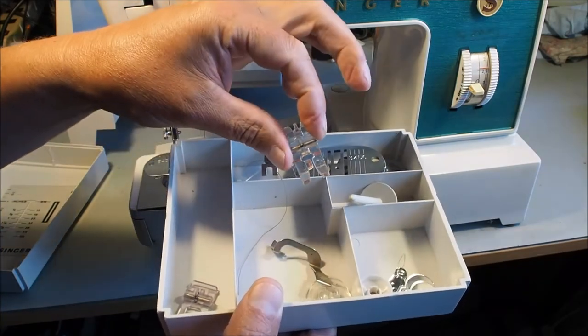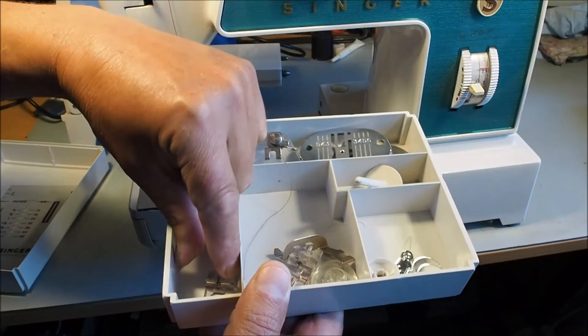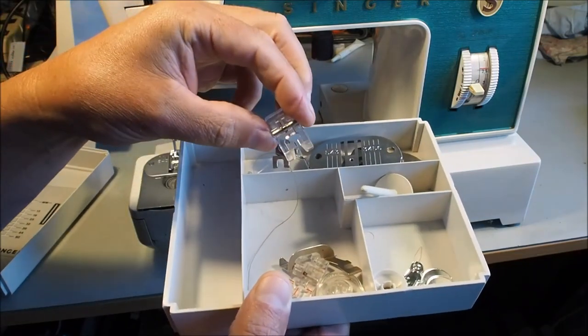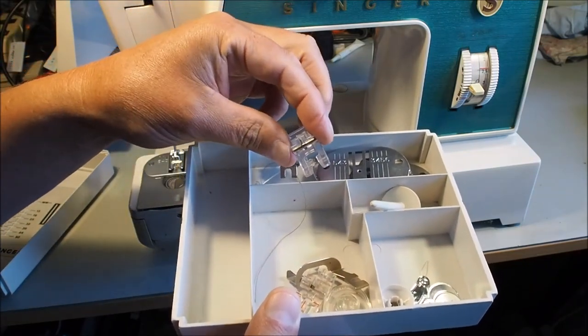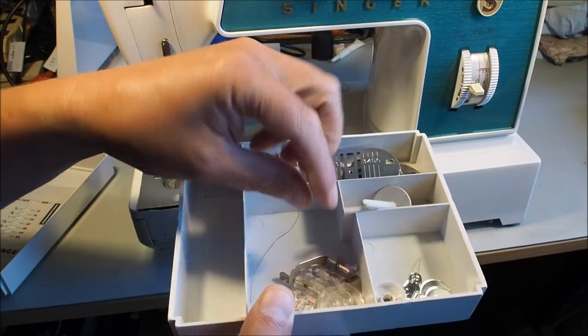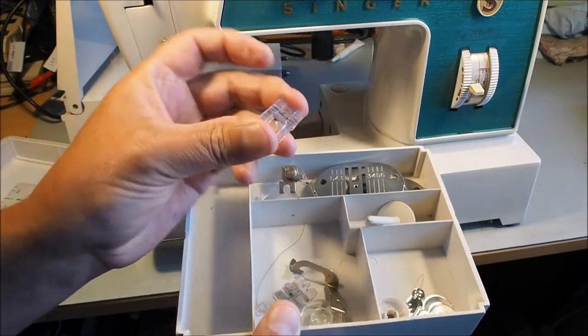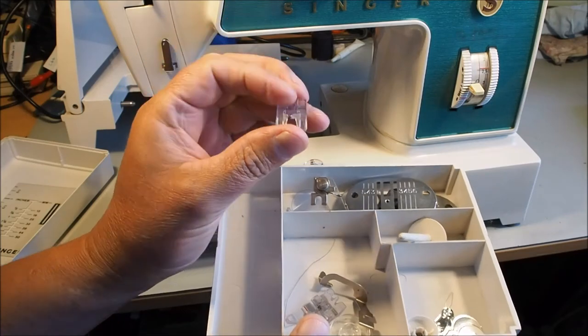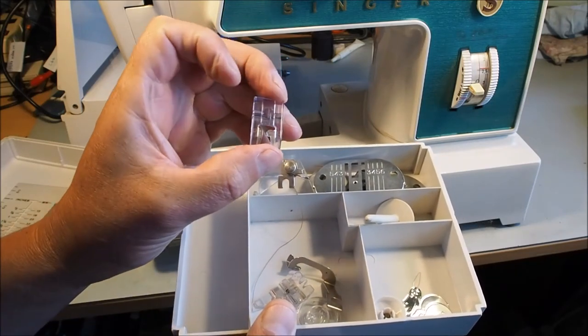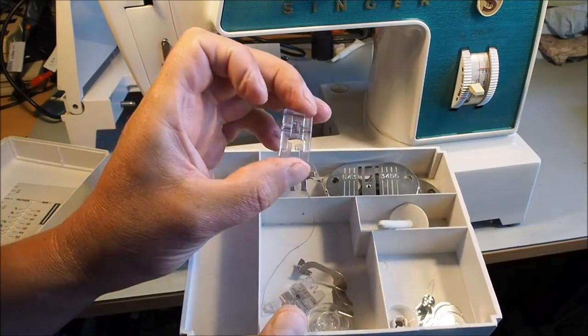There's a buttonhole foot and a satin stitching or stretch stitch foot, which has a little bit of clearance behind the needle to allow the satin stitching to pass through smoothly.